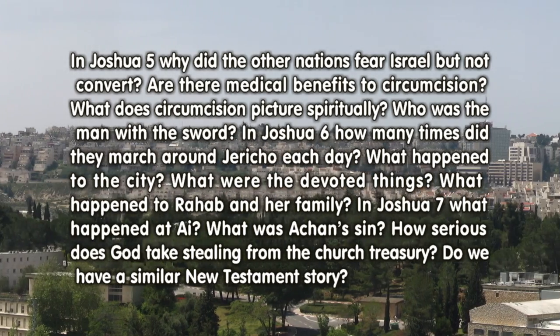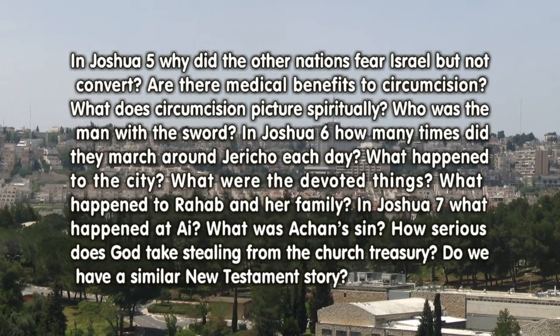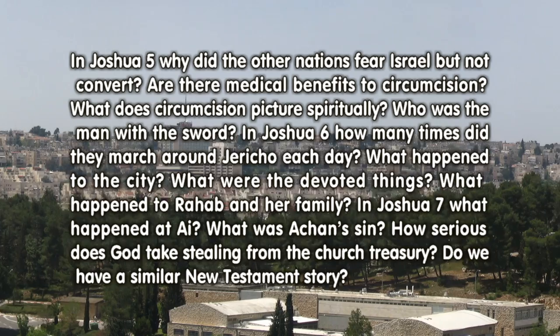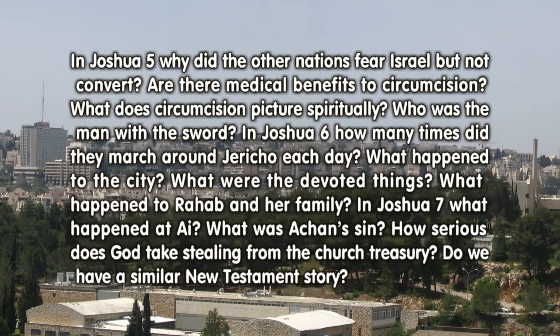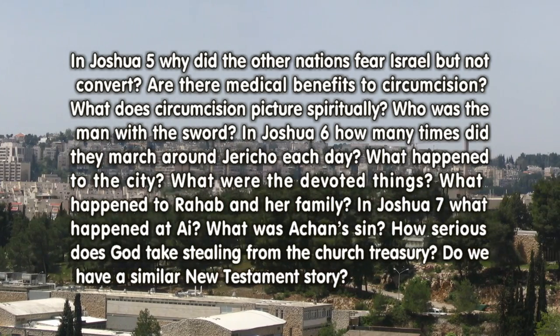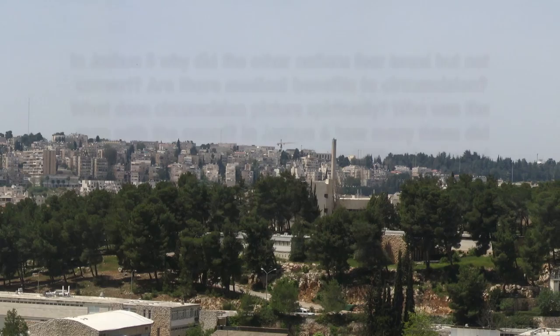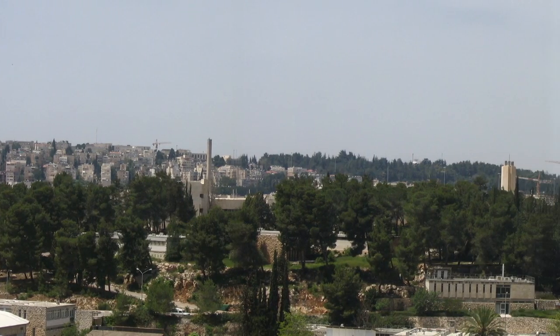In Joshua 7: What happened to Ai? What was Achan's sin? How seriously does God take stealing from the church treasury? Do we have a similar New Testament story?